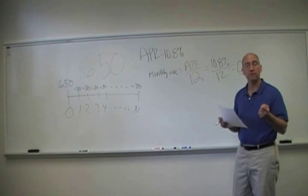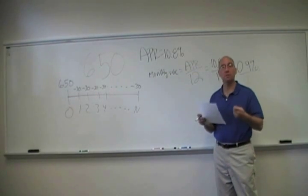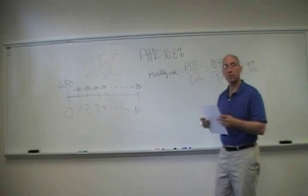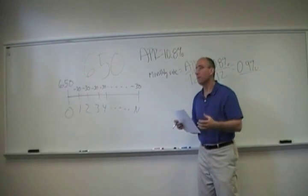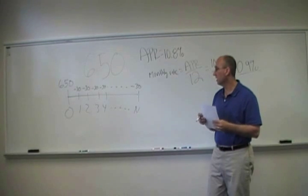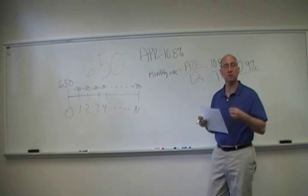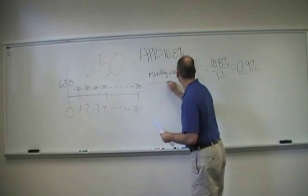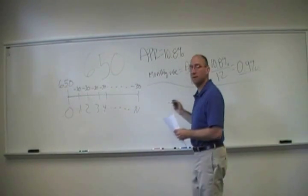So now all we want to figure out is what's N, what's the number of payments associated with an annuity where the payments are $30, the present value is $650, there's no special payment at the end so FV will be zero. So we want to tell the calculator end mode.